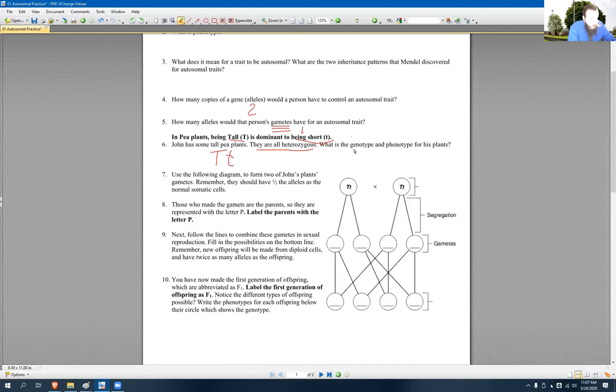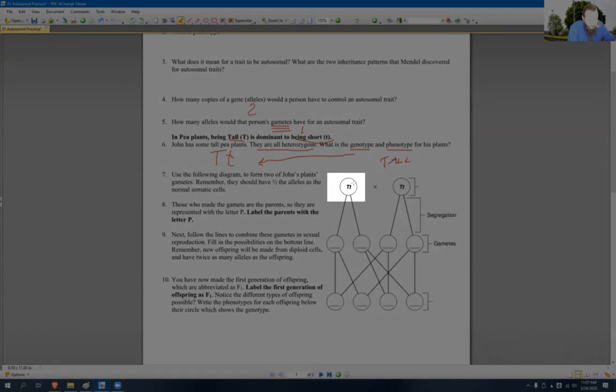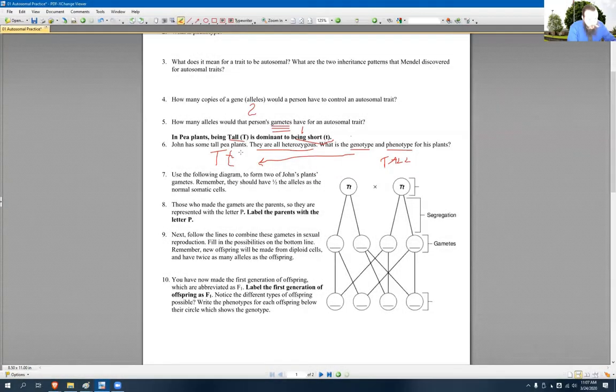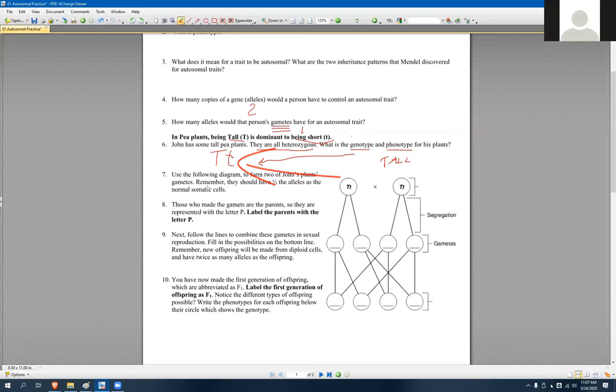And that is called the genotype. And then the phenotype for that would be how would that plant look, tall or short? Tall. Yep. And then you see this right here, big T, little T? Yeah. That's this plant we were just talking about. Okay. All right. So we got John's parent plants.